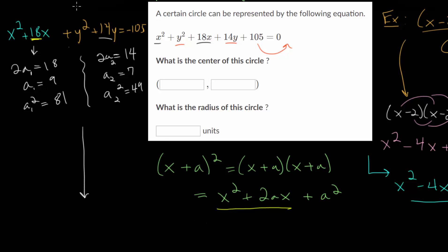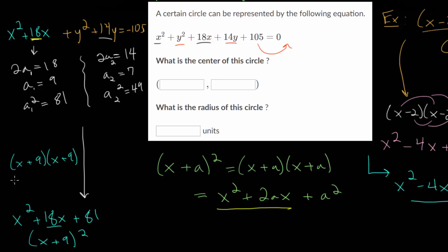Let's rewrite that with the numbers added in. We have x squared plus 18x plus 81, which can be transformed into the perfect square x plus 9 squared — it's always half the coefficient of x inside the parentheses, so since the coefficient is 18, that's 9. And likewise, for the y terms, we take y squared plus 14y and add 49, which simplifies to y plus 7 squared. You can verify each of these by multiplying them out.